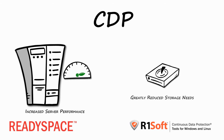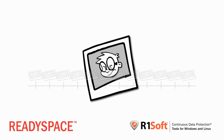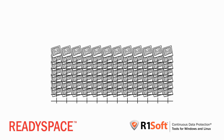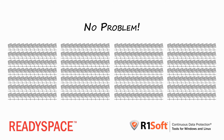R1Soft CDP greatly reduces storage needs by only saving the changes to our data after our first virtual full backup and recycling the old data. If you need to keep a snapshot representing how your server looked at every hour the last 24 hours, every day the last 7 days, and every week the last 4 weeks, no problem. R1Soft CDP will only keep the absolute minimum amount of data in storage needed to represent the unique disk sectors for those points in time.